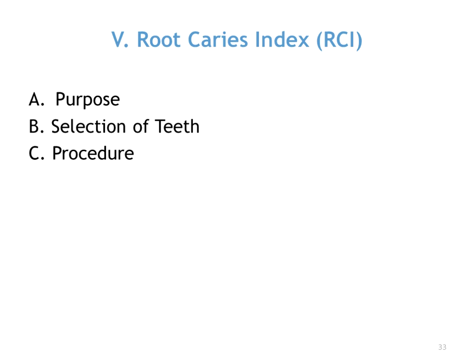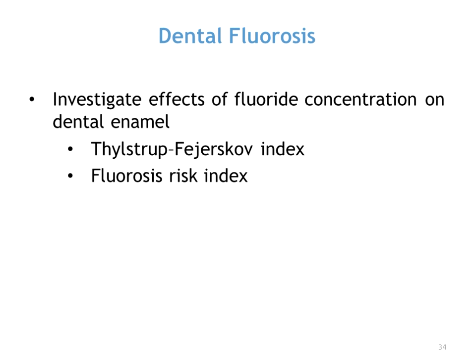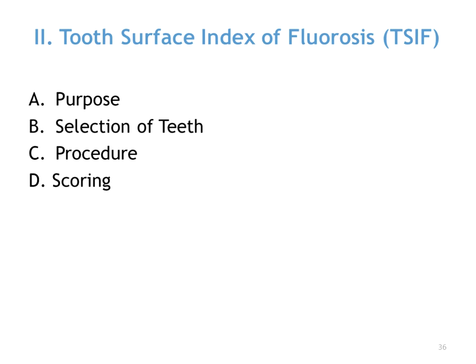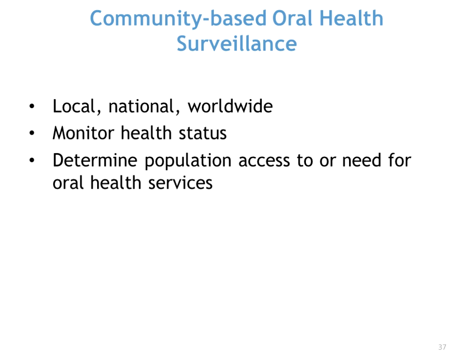Root Surface Caries has its own index — the Root Caries Index, or RCI. You'll notice a trend that these letters are meaningful abbreviations. We don't need to go into how this is calculated, but know that there is a specific one for root caries. Dental fluorosis, as you know from the fluoride chapter, also has fluorosis indexes: Dean's Fluorosis Index as well as the Tooth Surface Index of Fluorosis.